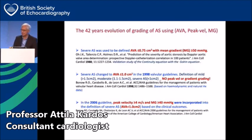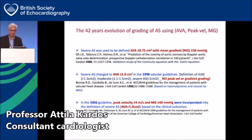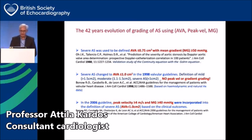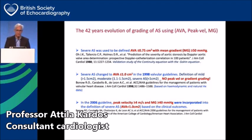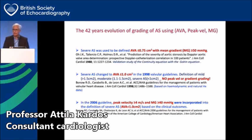What's the evolution of aortic valve stenosis grading? This goes back 42 years ago when a validation study from the States validated the continuity equation against the Gorlin equation. The aortic valve area was set at 0.75 cm² to describe severe aortic valve stenosis, with mean gradient correlating to more than 50 mmHg. In 1998, the AHA and ACC guidelines formally defined grades: mild more than 1.5 cm², moderate 1.1 to 1.5, and severe 1 cm² or less. Notably, peak velocity and mean gradient were not used for grading purposes at that time.